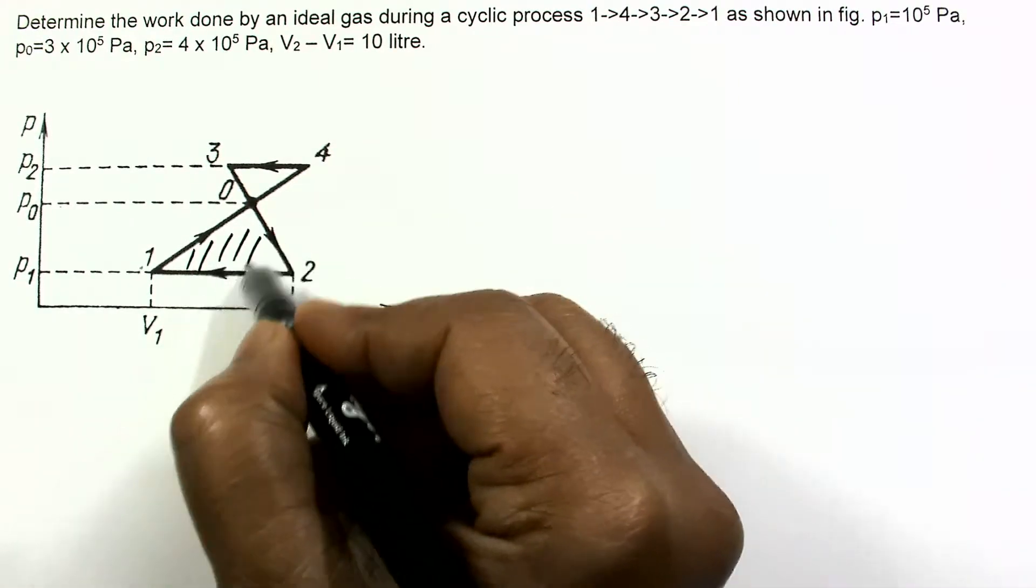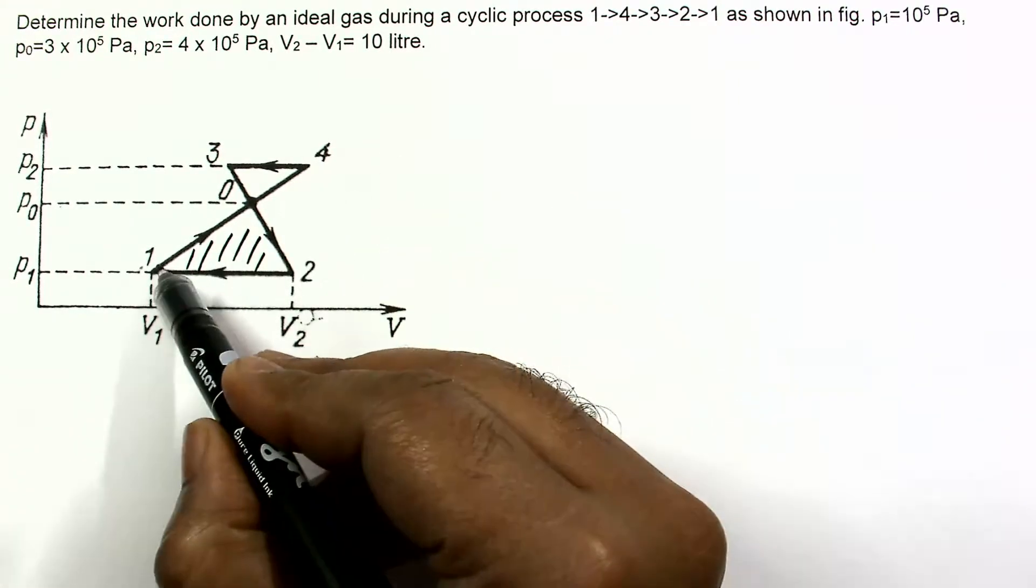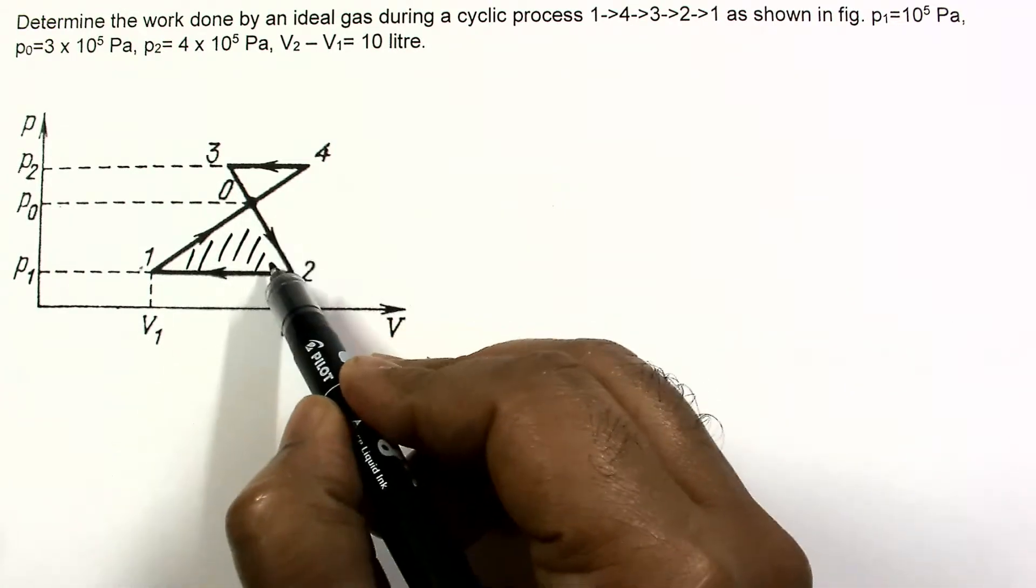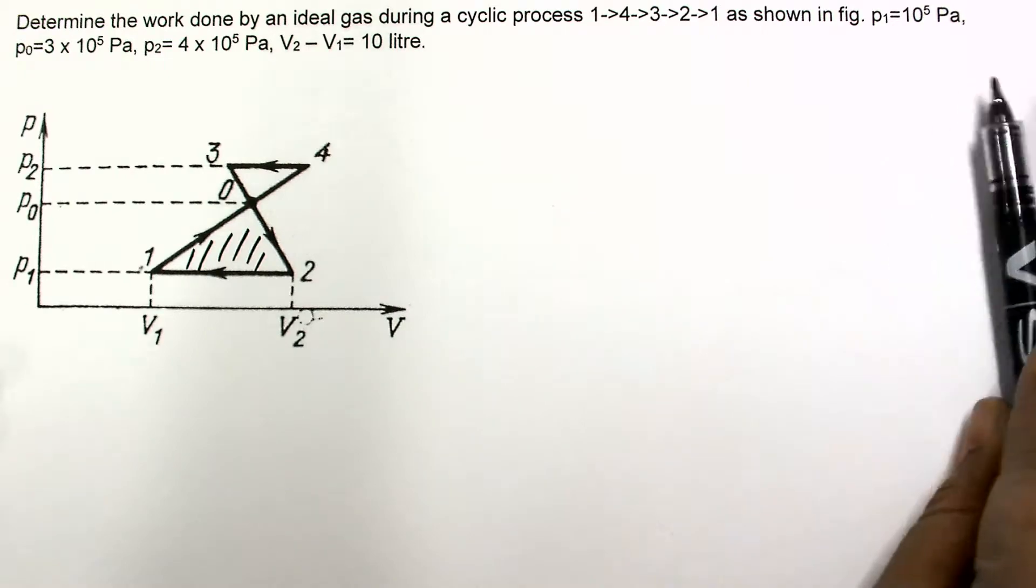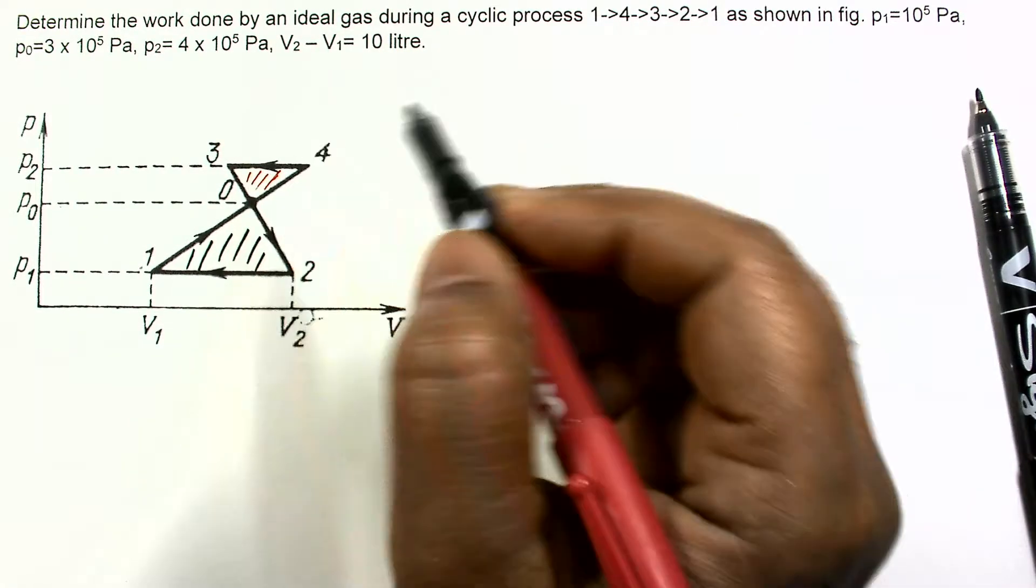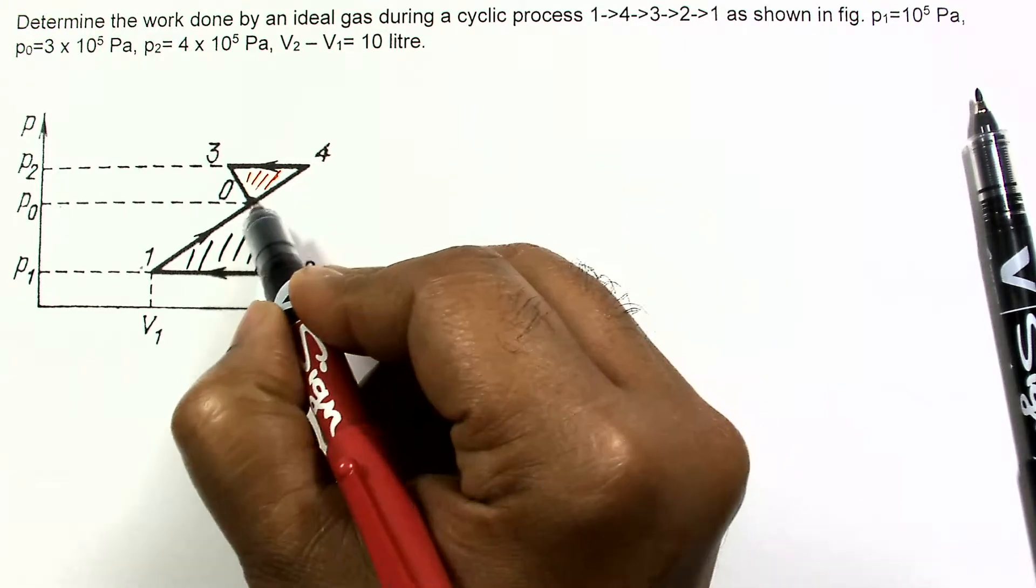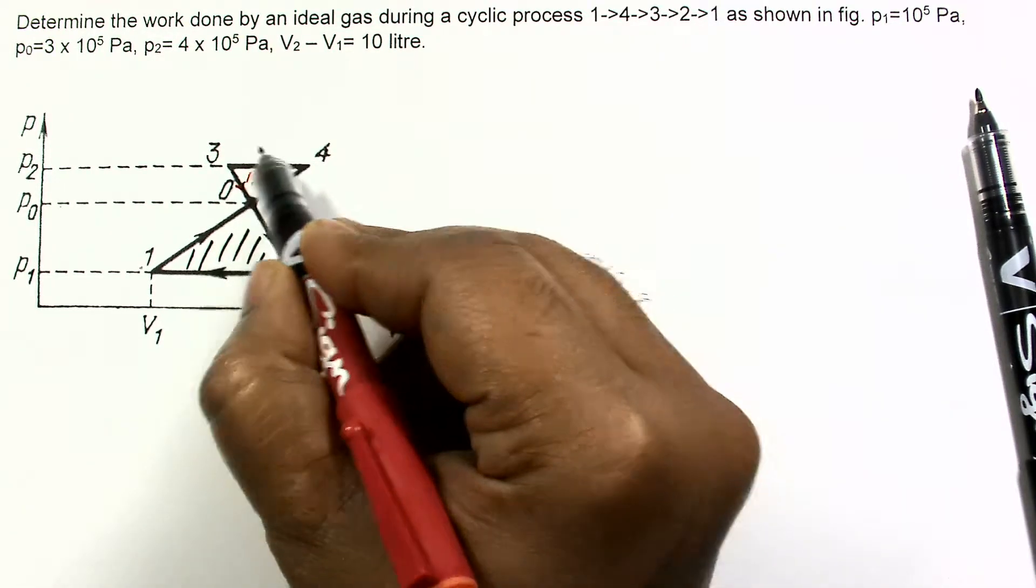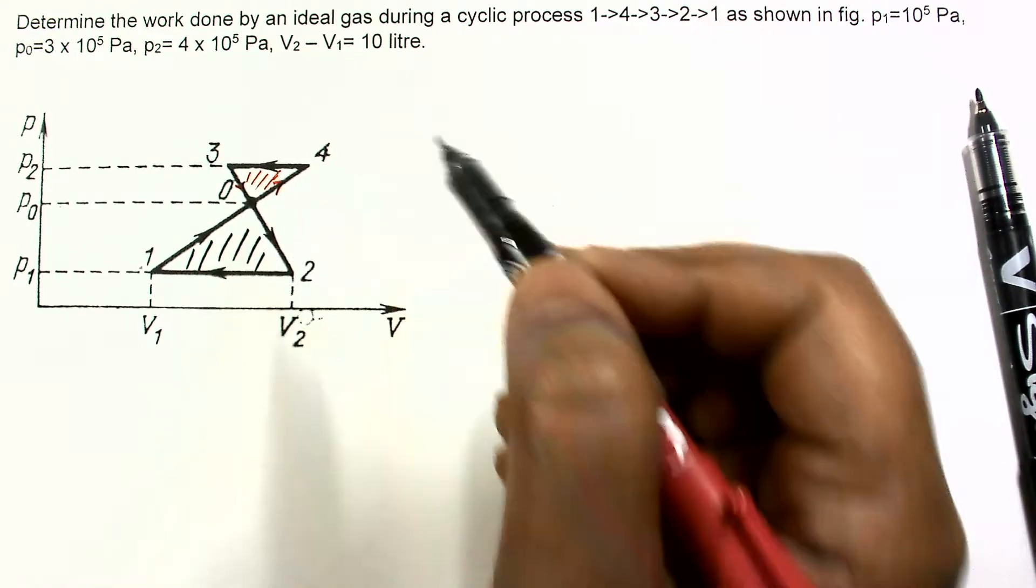This is one of the loop and we can see this loop is a clockwise loop, so work done in this will be positive. One loop will be this, and this loop is anti-clockwise. In anti-clockwise, work done will be negative.